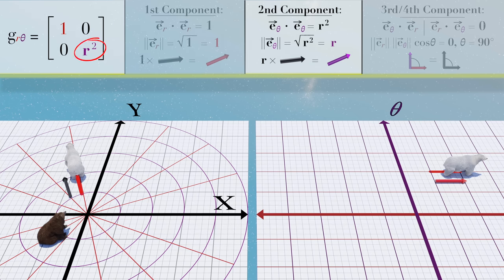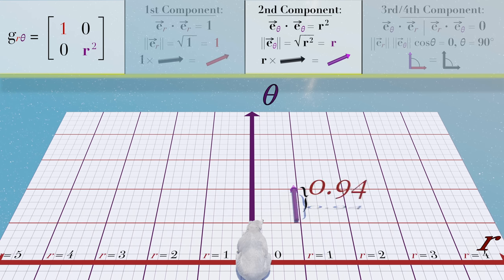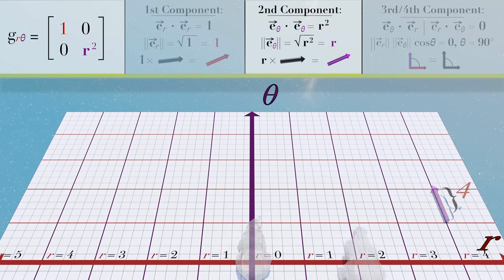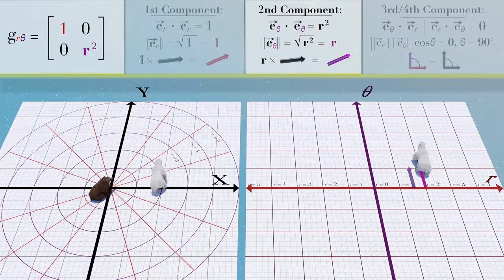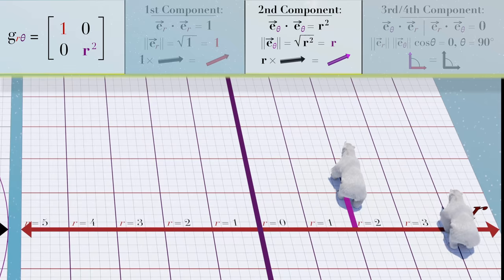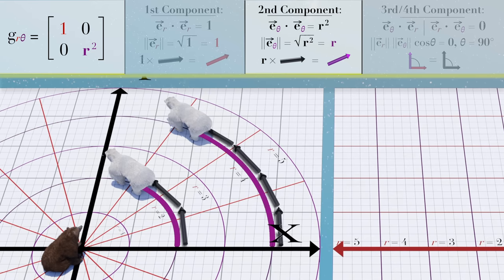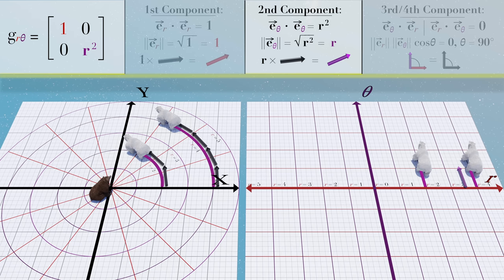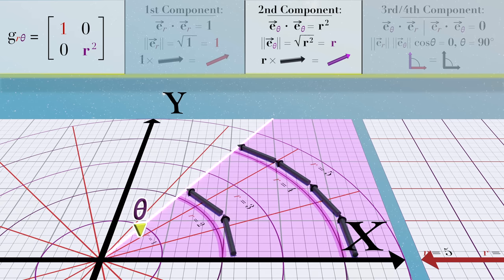The second component, r-squared, tells Polar Bear that his theta basis vector represents as many units of real-world distance as is equal to whatever r-coordinate he is located at. So if Polar Bear is located at r-coordinate 2 and moves one unit of theta-coordinate distance, he will move two units of distance in the real world. And if he's located at r-coordinate 4 and moves one unit of theta-coordinate distance, he will move four units of distance in the real world. This should make intuitive sense for polar coordinates, because any change in angle will sweep out a greater distance farther out from the origin.